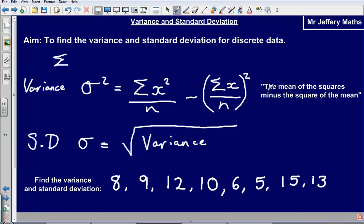Now a nice way to remember this is this phrase here: it is the mean of the squares, so the mean of the squares, this part here, minus the square of the mean. So the mean of the squares, add all of the squares together and divide by how many there are, minus the mean. Calculate the mean and then square it.